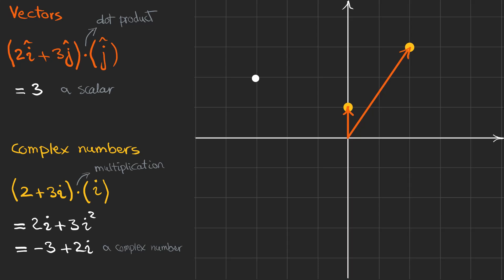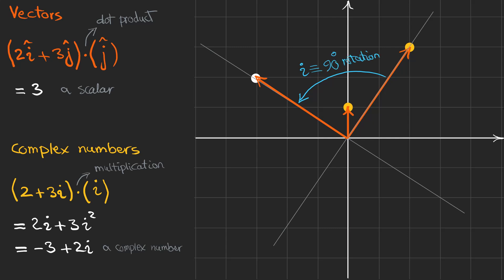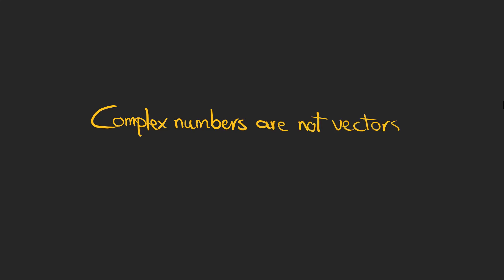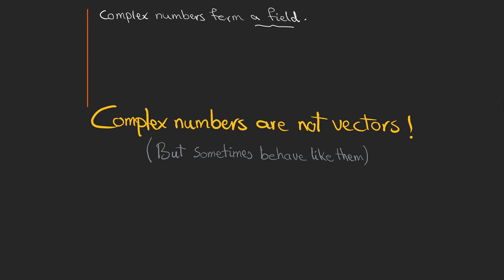This point is our new complex number, minus 3 plus 2i. If you pay attention to the direction of the first vector — 2i plus 3j — and associate a vector to our new complex number, you can see that multiplication by i has rotated the first vector by 90 degrees. To confirm these two vectors are perpendicular, we can find their dot product, which is zero. So we can safely say that complex numbers are not vectors, but sometimes behave like them.